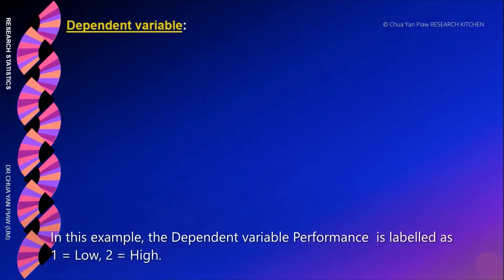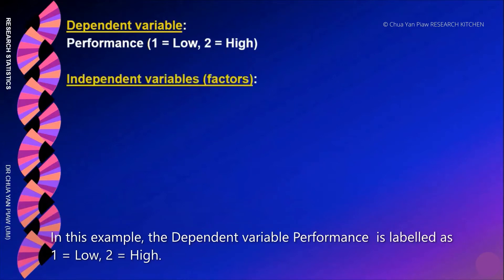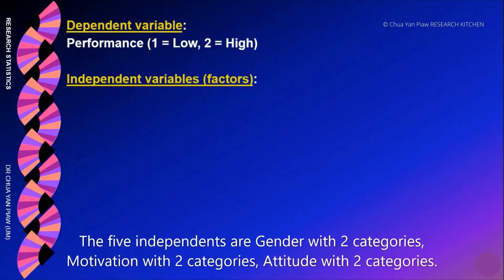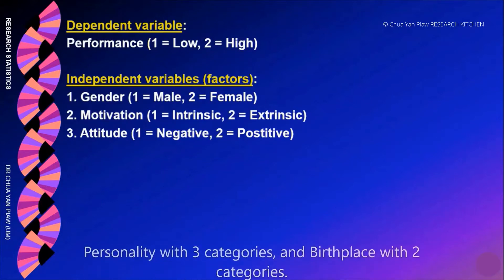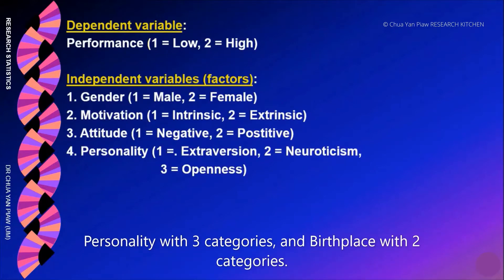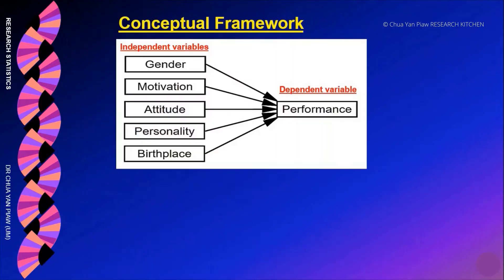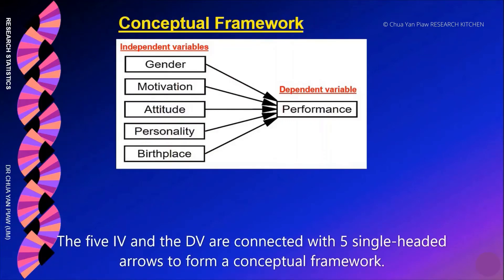In this example, the dependent variable performance is labeled as 1 equal to low, 2 equal to high. The five independent variables are gender with two categories, motivation with two categories, attitude with two categories, personality with three categories, and birthplace with two categories. The five independent variables are connected with five single-headed arrows to form a conceptual framework.